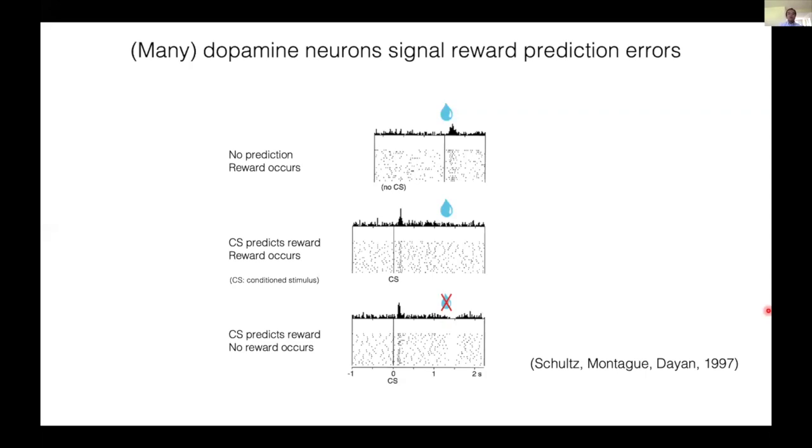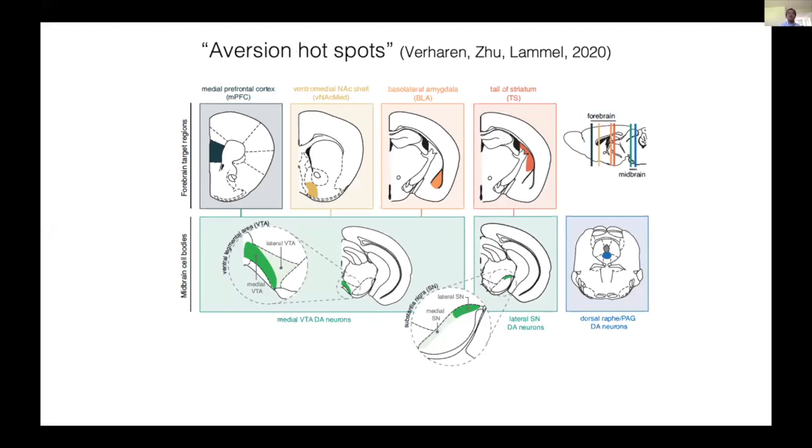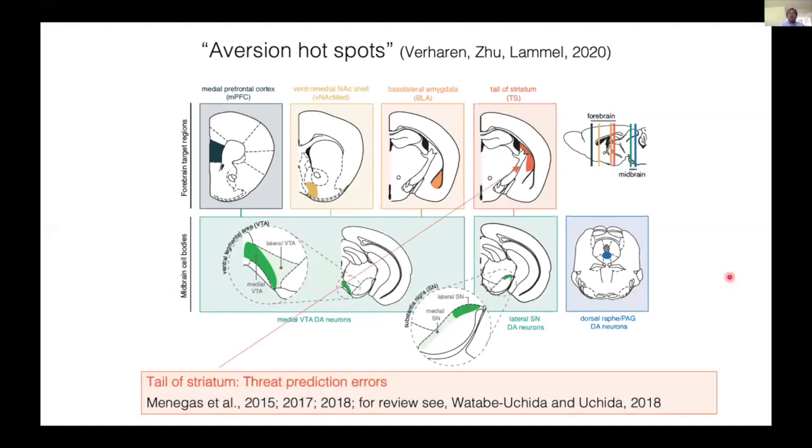For example, some dopamine neurons are activated by aversive stimuli or threat. These dopamine neurons tend to project to specific targets forming aversive hotspots, as overviewed in this review by Stefan Lammel. Our group has shown that dopamine neurons projecting to the tail of the striatum signal threat prediction errors.